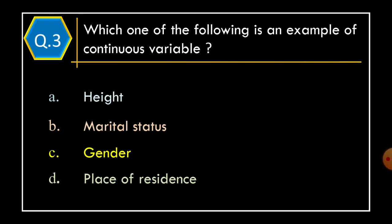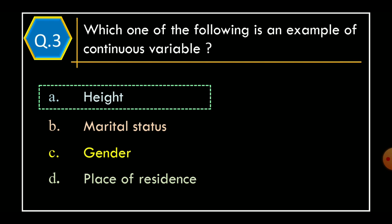Question 3: which one of the following is an example of a continuous variable? Option A: height? Option B: marital status? Option C: gender? Option D: place of residence? The correct option is Option A: height.